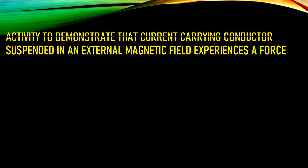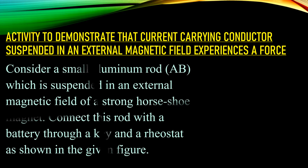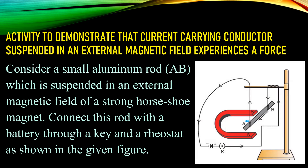Now we will see the activity to demonstrate that a current carrying conductor suspended in an external magnetic field experiences a force. For this activity, first we take an aluminium rod, labeled AB in the figure. This aluminium rod is suspended in an external magnetic field produced by a strong horseshoe magnet — shown in red in the figure with north and south poles marked. The rod is present between these two poles, and it is connected to a battery through a key and rheostat.